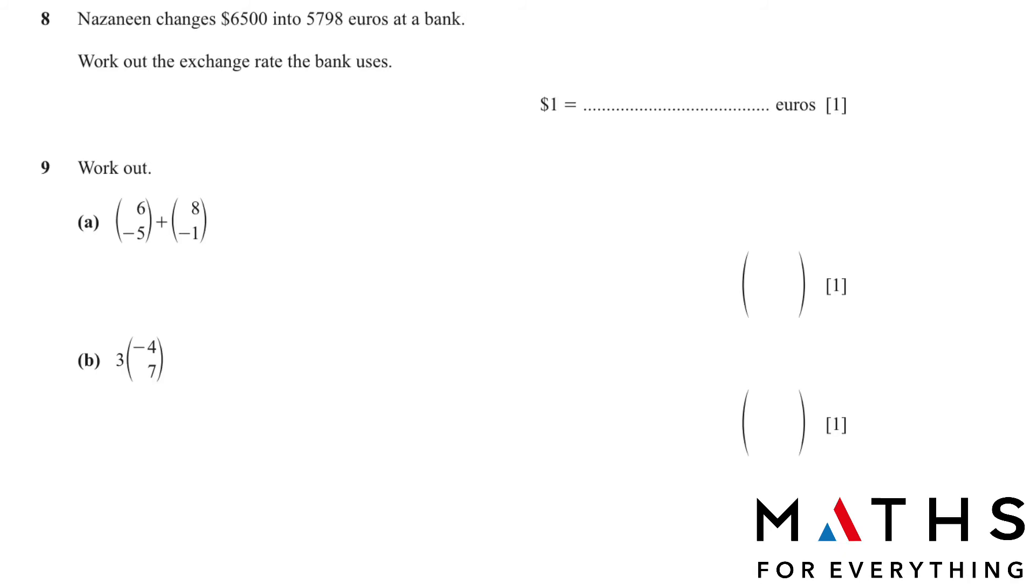Question number 8. Nasneed changes $6,500 to Euros, 5,798 at a bank. Work out the exchange rate the bank uses. 1 dollar is equal to how many Euros? We cross multiply. So 6,500 multiplied by X is equal to 1 times 5,798. Divide 5,798 with 6,500. We will get the answer, 0.892. So 1 dollar is equal to 0.892 Euros.